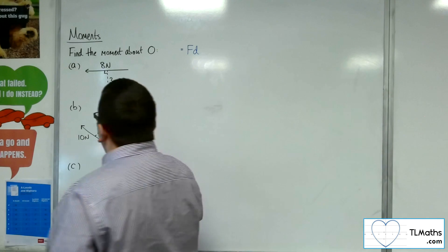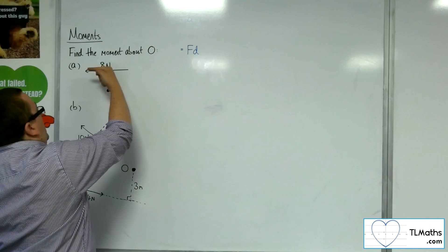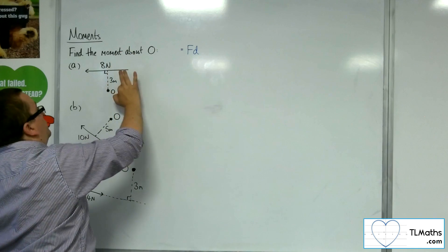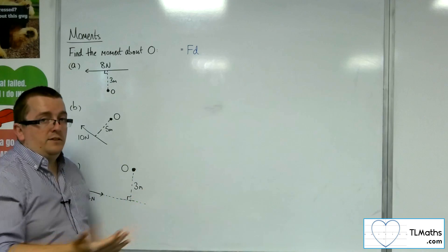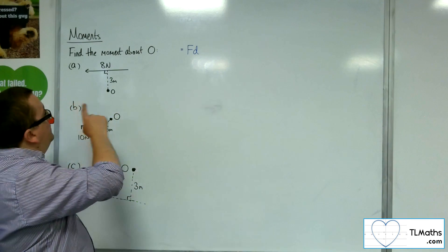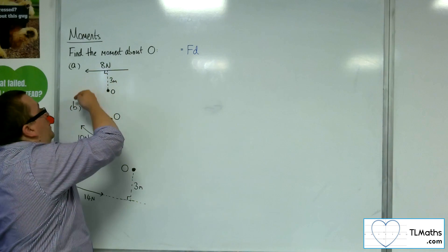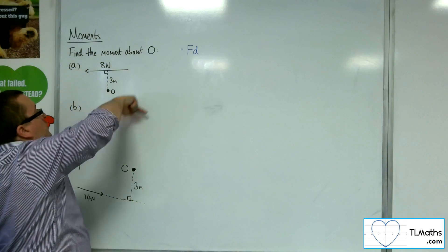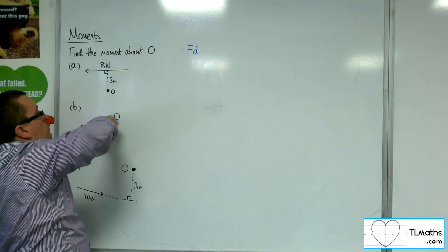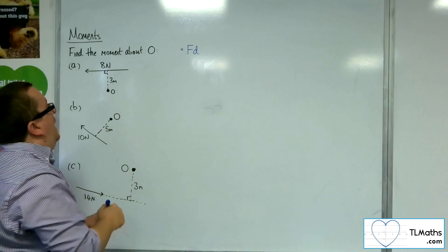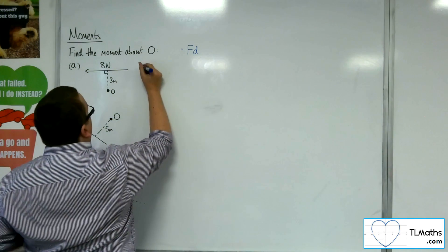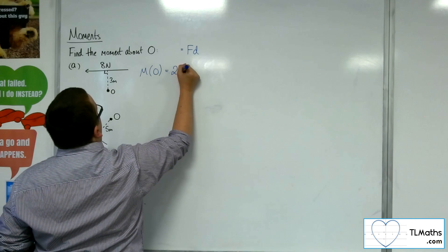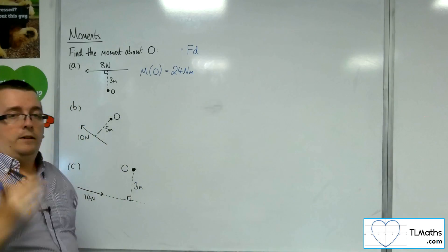Here we've got this 8 Newtons working that way. So clearly the force times the perpendicular distance is 8 times 3, so 24 Newton-metres. Then which way is it going? Well, because it's going that way and O is below it, that would mean it would make this rotation of that description. We're going anticlockwise. And so, the moment about O would be equal to 24 Newton-metres.